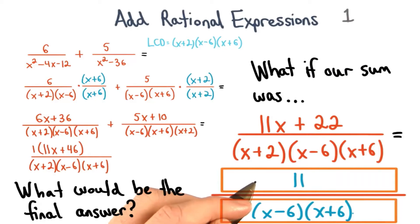It turns out we can. The numerator would be 11, and the denominator would be x minus 6 times x plus 6. Great job if you figured that one out.